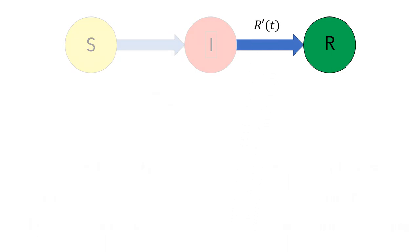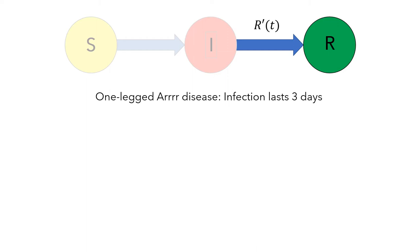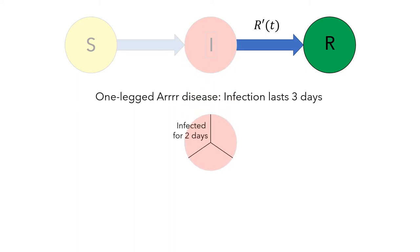For the disease we're examining, the one-legged R disease, the infection lasts three days, at which time people who are infected either recover or sail away. And in our model, we're going to make a simplification about the infected group. We'll assume that one-third of the infected group has been infected for two days, one-third has been infected for one day, and one-third was infected today.